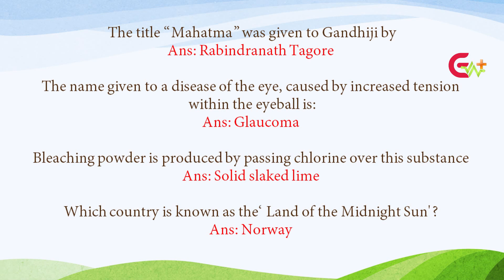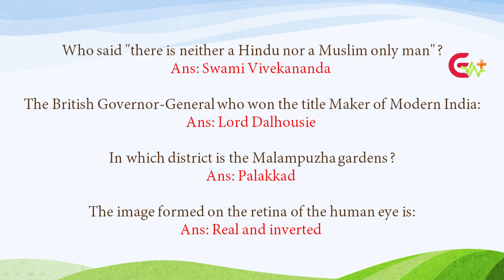Bleaching powder is produced by passing chlorine over which substance? Answer: Solid Slaked Lime. Which country is known as the land of the midnight sun? Answer: Norway. Who said 'There is neither a Hindu nor a Muslim, only man'?